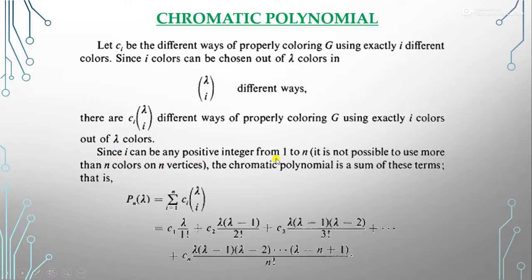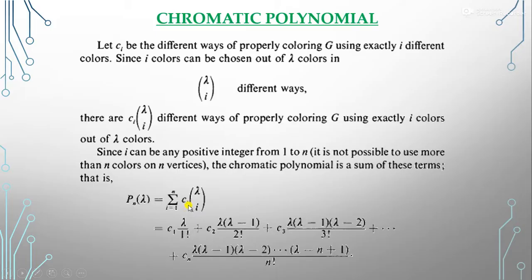Since i can be any positive integer from 1 to n, and it is not possible to use more than n colors because we have n vertices, the chromatic polynomial is a sum of these terms. So P_n(λ) equals the summation from i=1 to n of c_i × λC_i. We can expand λC_i using the factorial formula: nCr = n! / (r! × (n−r)!).